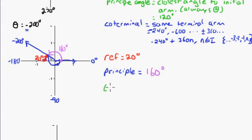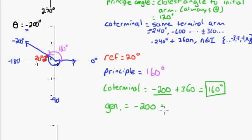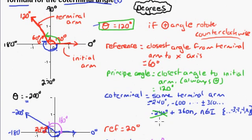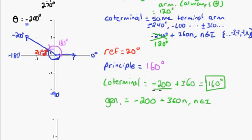The coterminal angle will have the same terminal arm. The coterminal angle here is simply negative 200 plus 360, which equals 160 degrees — that's just one coterminal angle. The general solution to all coterminal angles is negative 200 plus 360n, where n is an element of integers. Note: the 240 mentioned earlier should actually be the original angle, 120 degrees.